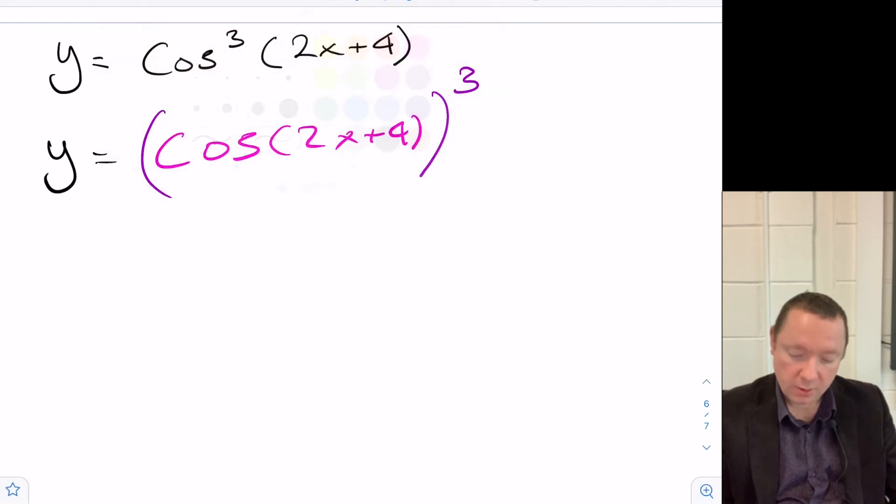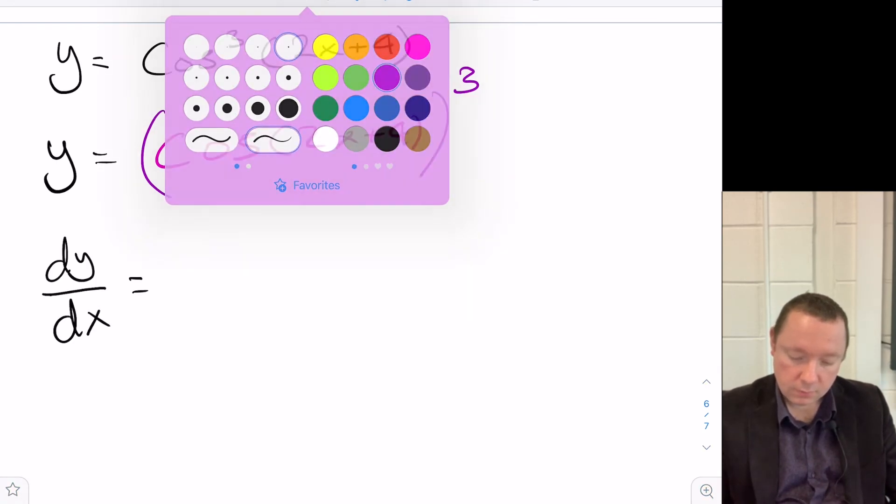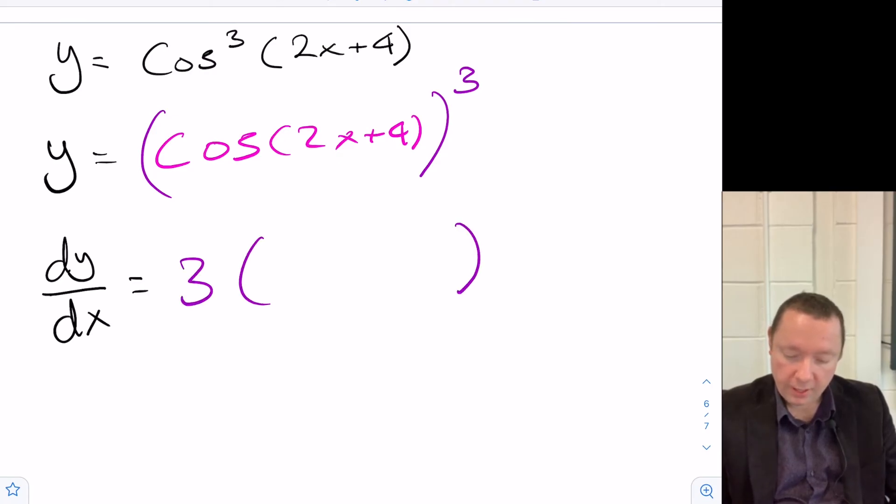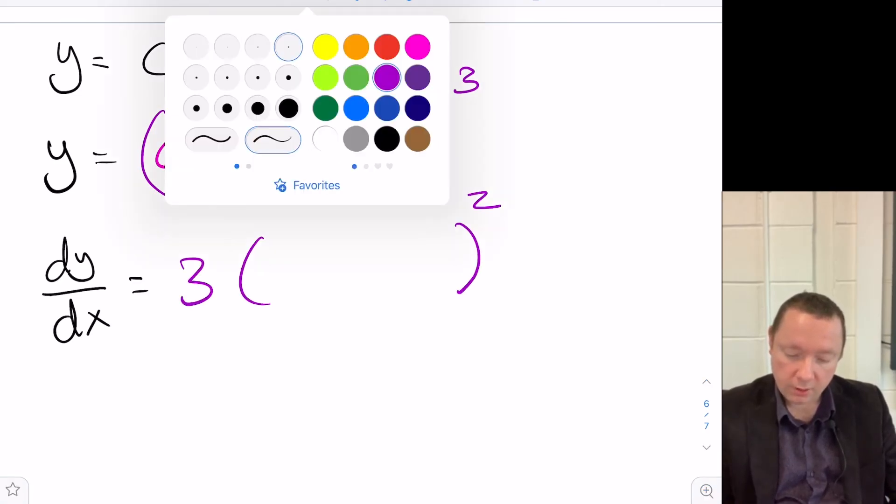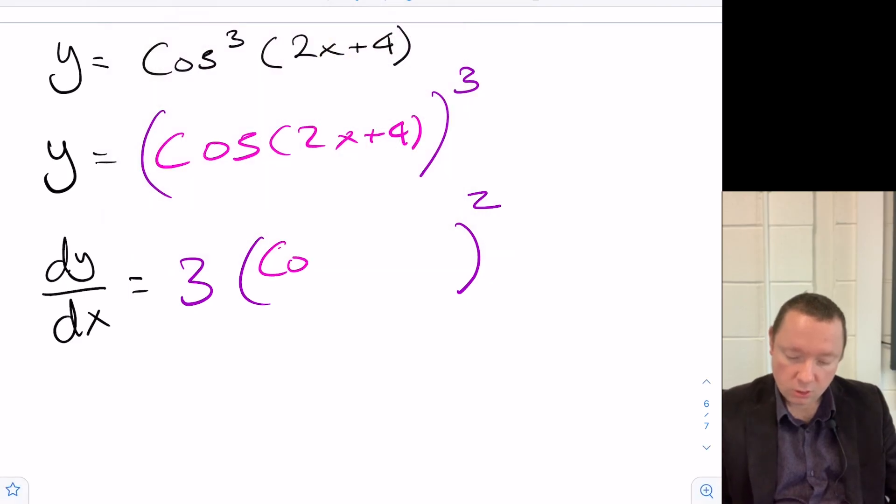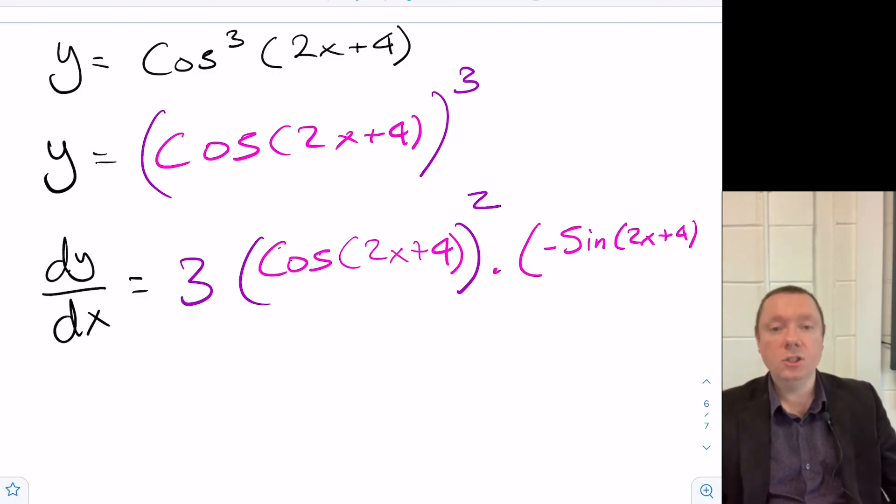So we're just keeping our wits about us. dy/dx, 3 comes down to the front, times our whole inner squared. And our inner is cos(2x plus 4). And now we need to differentiate this whole thing. So remember that means that cos becomes minus sine (2x plus 4). But this 2x plus 4 is also a function, so I need to differentiate that. So I need to times by 2.